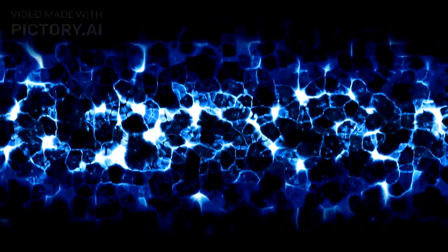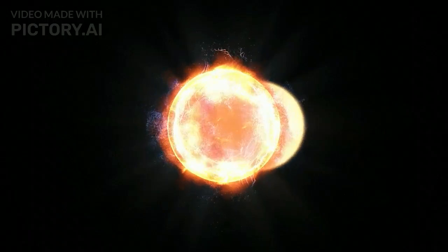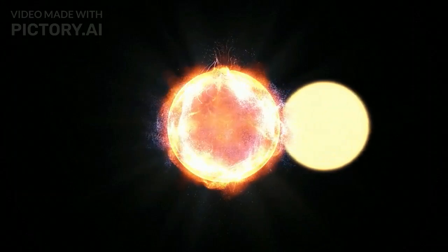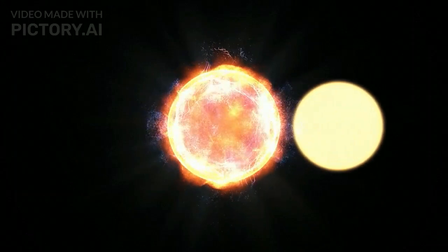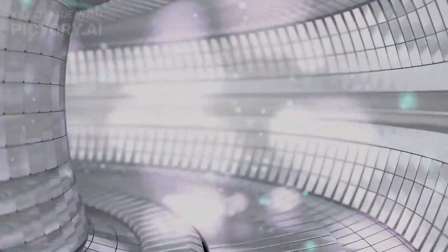The Sun is composed primarily of hydrogen and helium in the form of plasma, where electrons are not bound to atoms, resulting in a mixture of free electrons and ions. The Sun's interior is divided into several layers, with the core at the center, surrounded by the radiative zone and the convective zone. The core is where nuclear fusion occurs, converting hydrogen into helium and releasing vast amounts of energy.